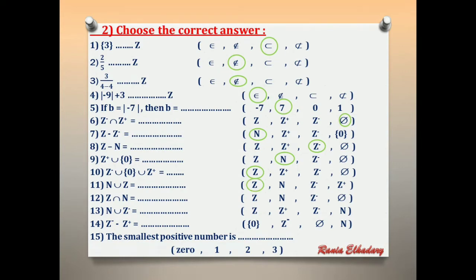Number 12: Z intersection N. The intersection sign gives us the smallest set. The smallest between natural and integers is natural. The answer is N.